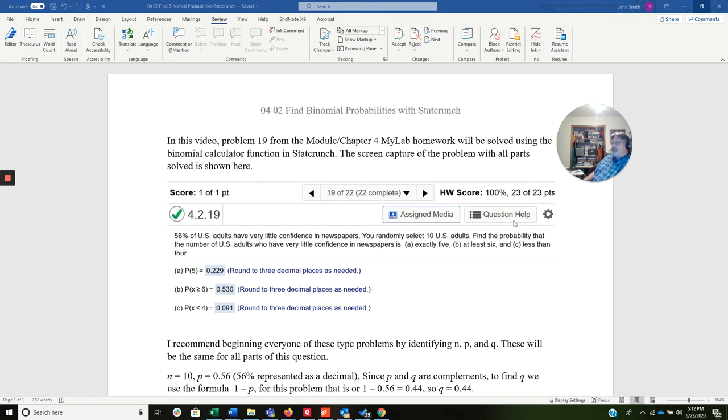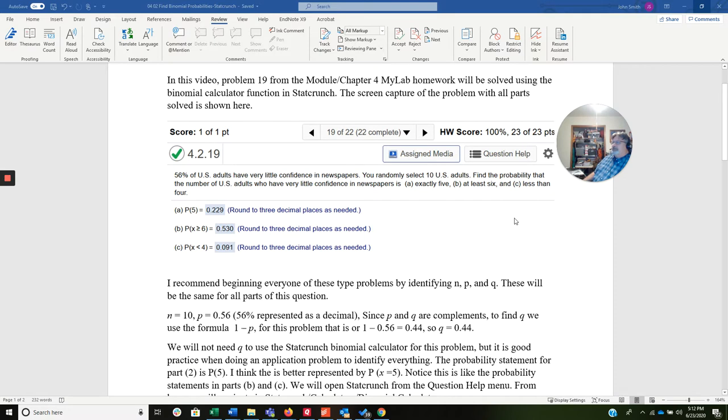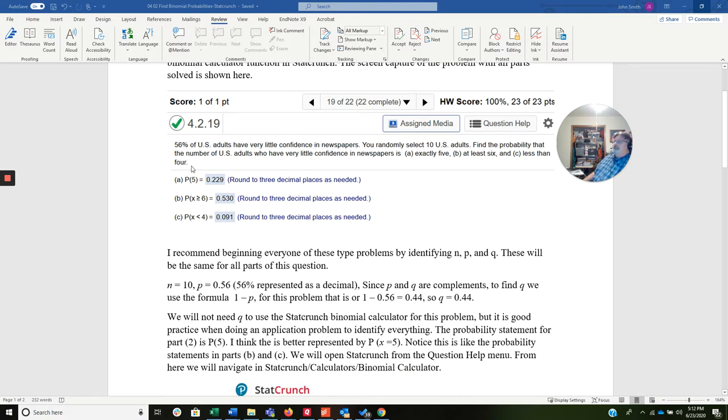So here's the screen capture of the picture with all the parts solved. 56% of U.S. adults have very little confidence in newspapers. You randomly select 10 U.S. adults. Find the probability that the number of adults who have very little confidence in newspapers is exactly 5, at least 6, and less than 4.